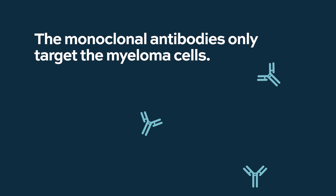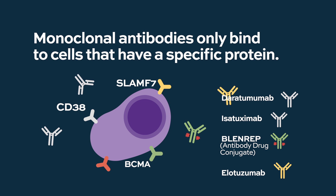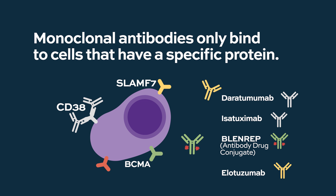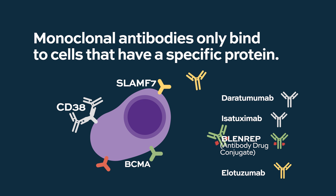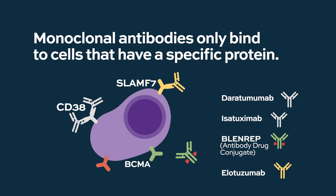Monoclonal antibodies have a receptor and they bind only to cells that express a certain protein. For instance, it can be CD38, such as daratumumab or isatoximab. We also know that myeloma cells express SLAMF7 — elotuzumab binds to SLAMF7. BCMA is another protein expressed by myeloma cells, and blenrep is a drug-conjugated antibody that binds to BCMA.